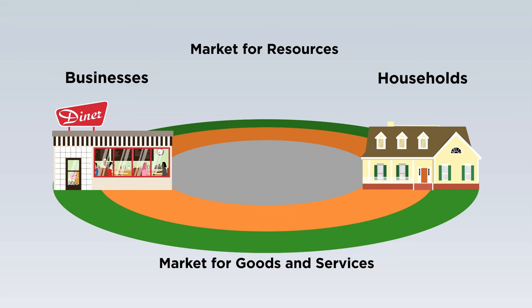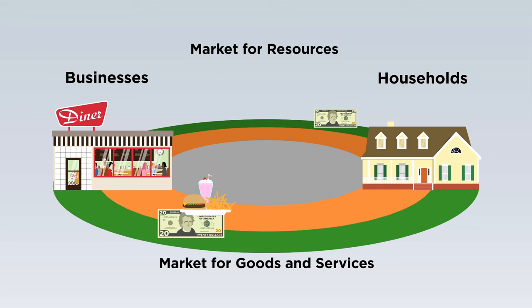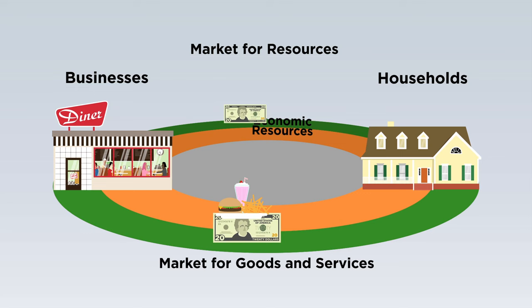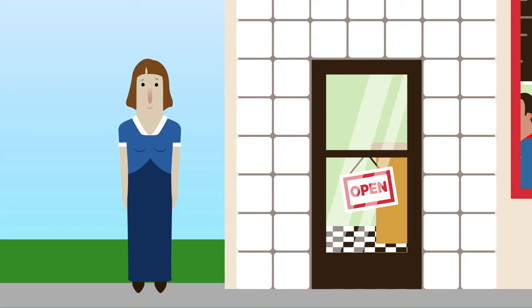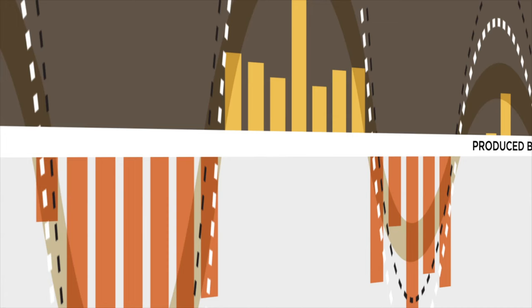Second, the model shows the flow of money in exchange for goods and services and resources. Money flows clockwise, while goods and services and resources flow counterclockwise. The circular flow model is a simple tool for learning about the economy — it shows the relationship between households and businesses and how these different decision makers fit together. It also shows how money keeps the economic resources and goods and services flowing around and around in the economy. This video was produced by the Federal Reserve Bank of St. Louis. For more information, visit us online at stlouisfed.org.